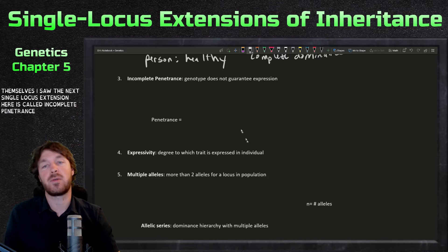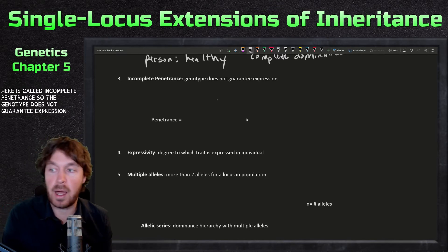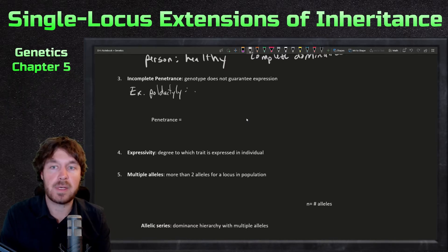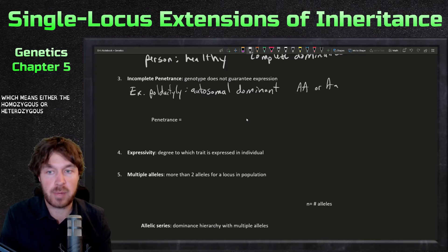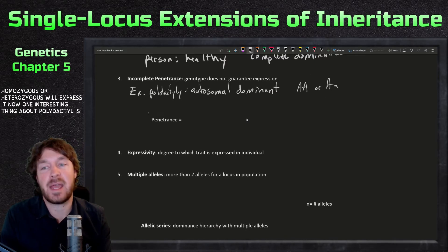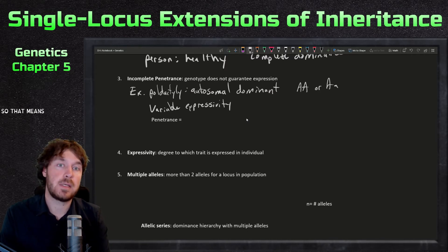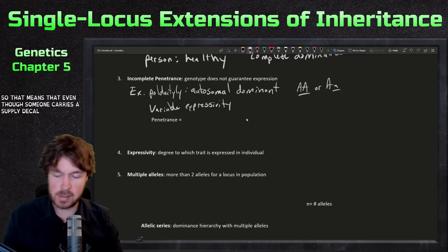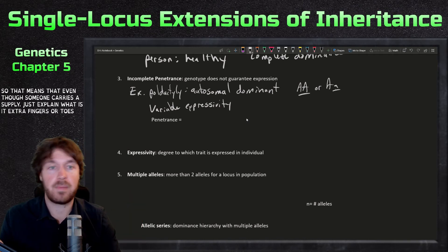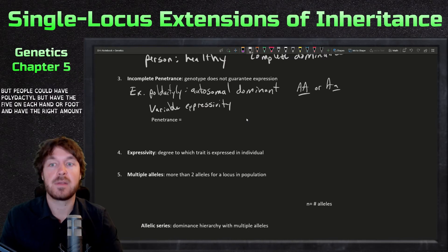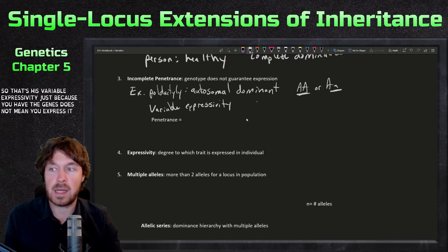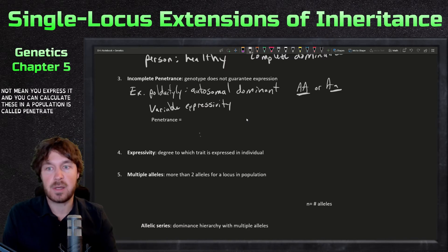The next single locus extension is called incomplete penetrance — the genotype does not guarantee expression. The biggest example is polydactyly, which is an autosomal dominant disorder, meaning either the homozygous or heterozygous form will express it. Polydactyly — extra fingers or toes — has variable expressivity: someone could carry the gene but still have the normal number of fingers or toes. You can calculate this in a population as penetrance — the percent of individuals with the genotype who express the phenotype.